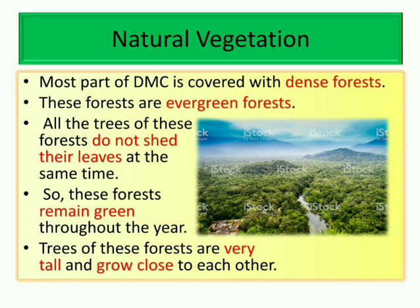Most of the Democratic Republic of Congo is covered with dense forest, because of its hot and humid climate. These forests are evergreen forests — all the trees do not shed their leaves at the same time. Different trees shed leaves at different times, so these forests remain green throughout the year.